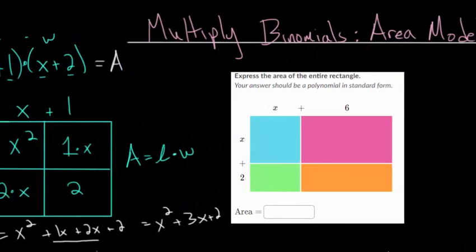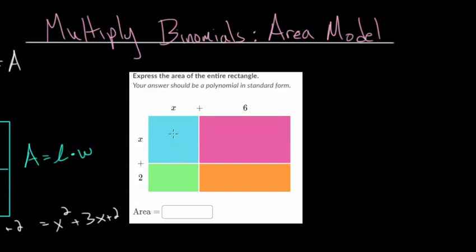But let's do some problems. And we're just going to find the area of each of these different colored boxes and then add them all together. So we have x times x, which is x squared. 6 times x, so that's 6x. This is x times 2, so 2x. And 6 times 2 is 12. We add them together. We get x squared, 6x and 2x would be 8x. And then plus 12 at the end. So let's do a couple more of these.